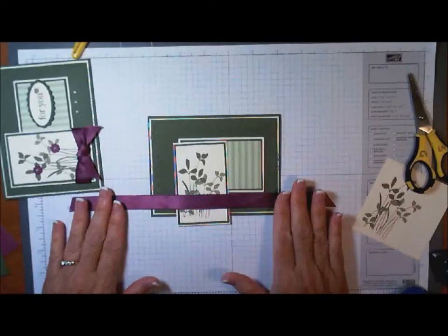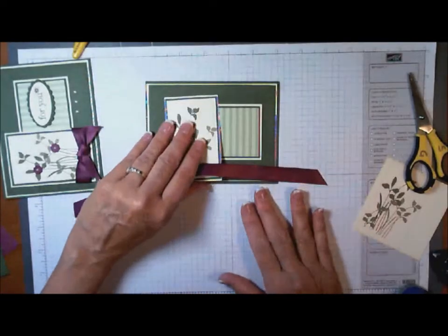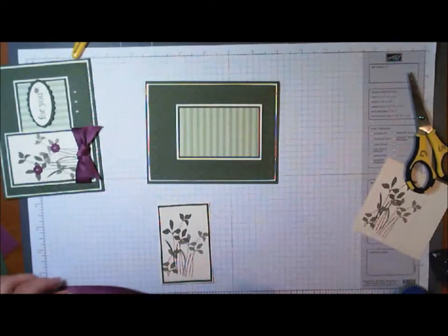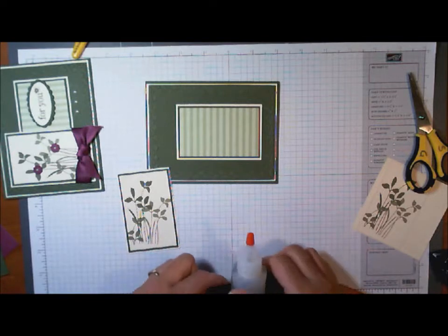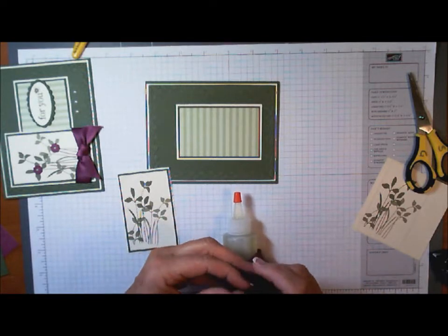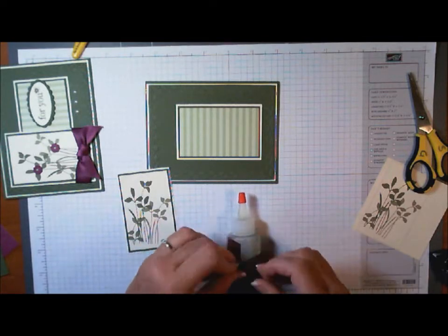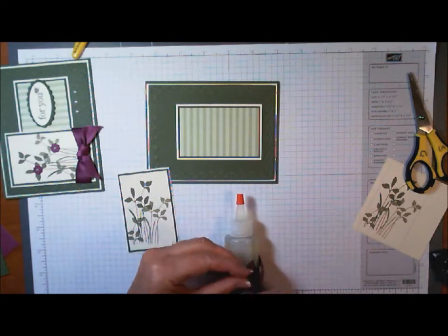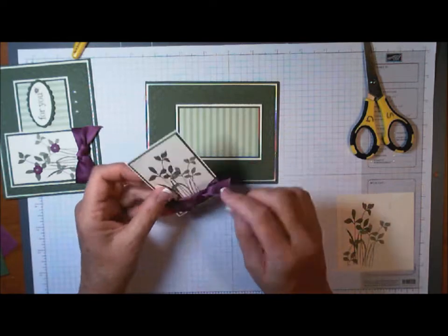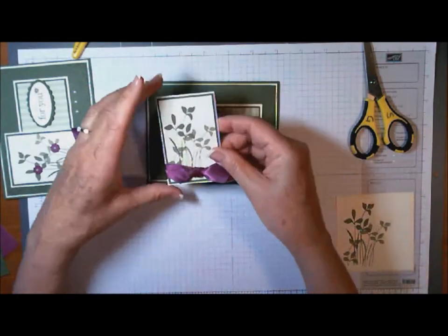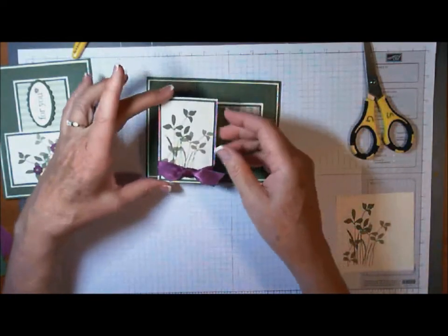Before we mount our artwork piece to the front of our card, we want to tie our ribbon around it. We're using a piece of Rich Razzleberry, and the Rich Razzleberry ribbon is cut nine or ten inches. You can tie it directly around your card, but because I like the back to be flat and I want my knot to be perfect, I'm going to use my handy dandy technique of tying it around something cylinder shaped. Now that we have our ribbon adhered the way we want it and taped down on the back, this is going to be mounted to the front with some dimensionals.